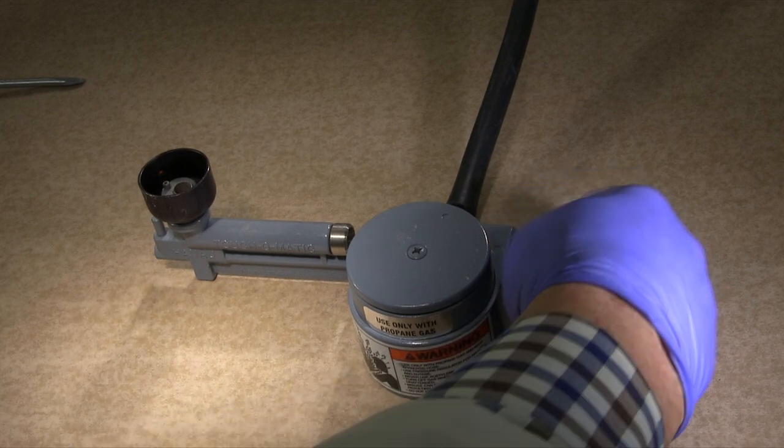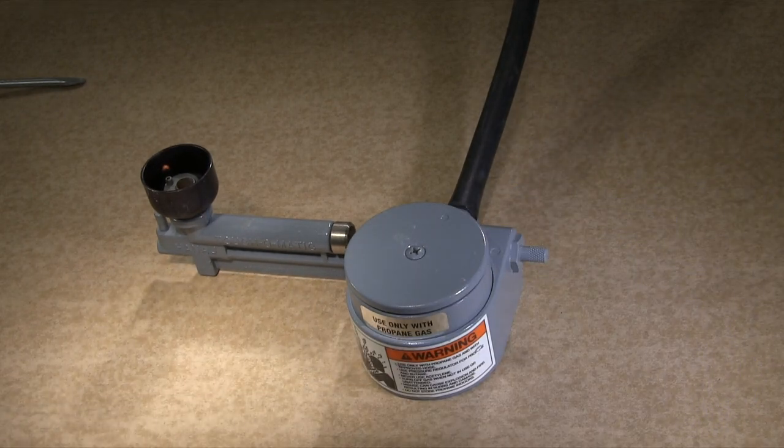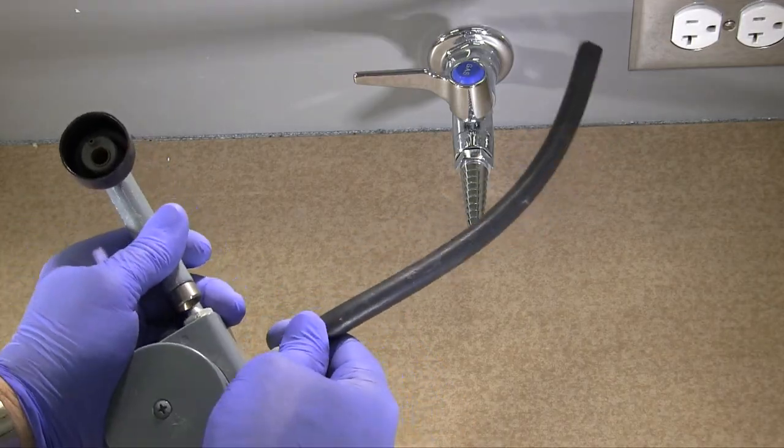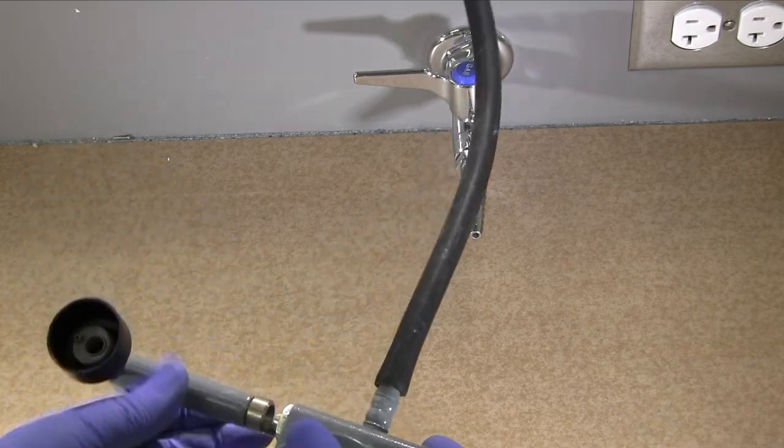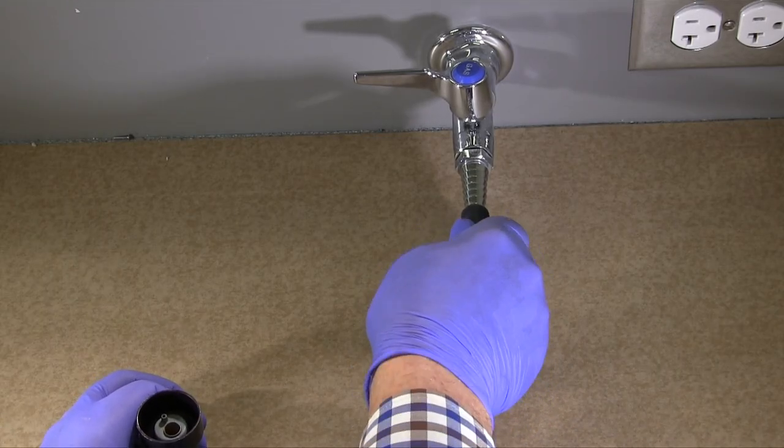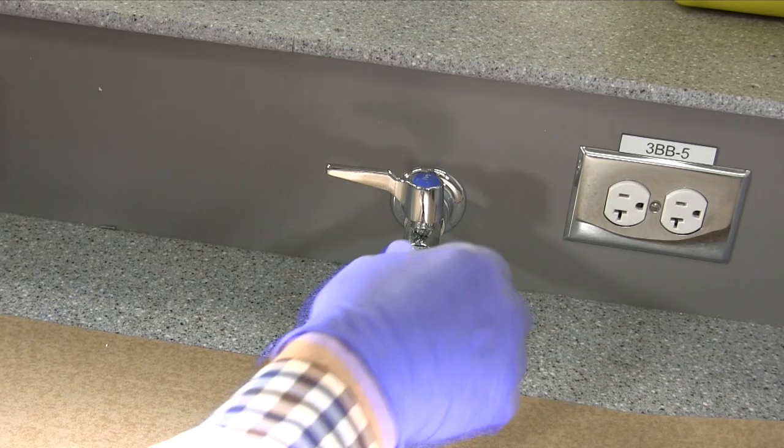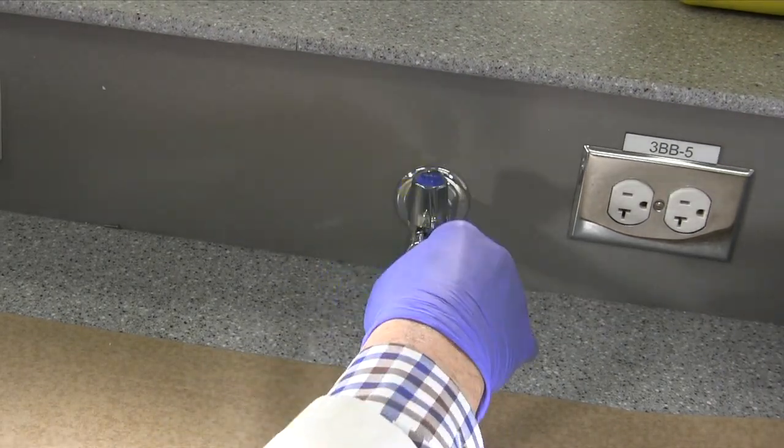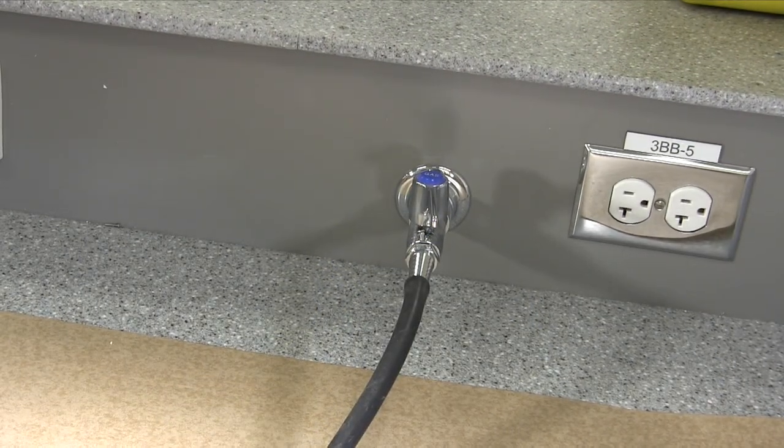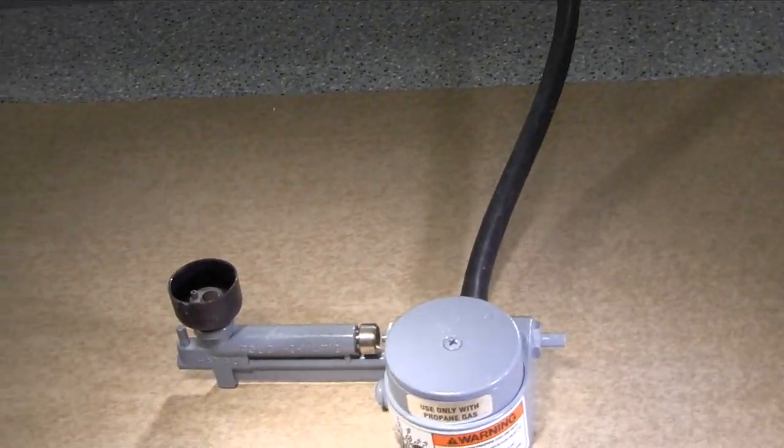To use the burner, make sure the gas adjustment screw is turned completely clockwise to the off position. With the gas off, attach the gas hose firmly to both the burner and then to the source. Turn the gas source lever on, and then make sure there is no smell of gas. That would indicate a leak.